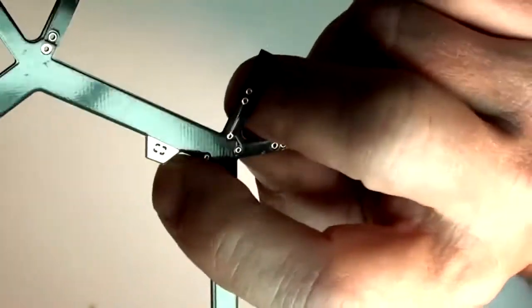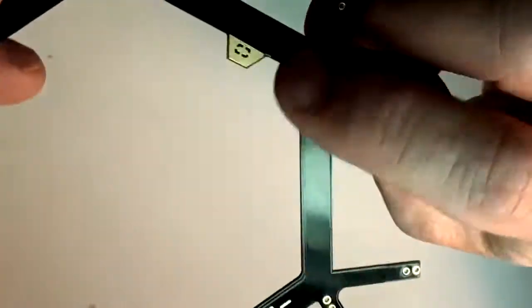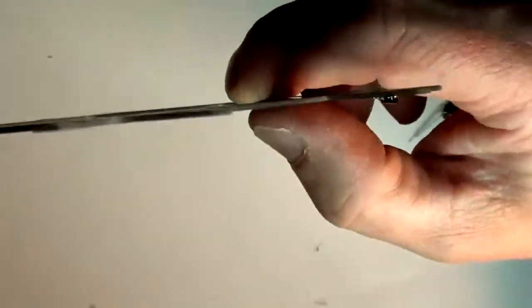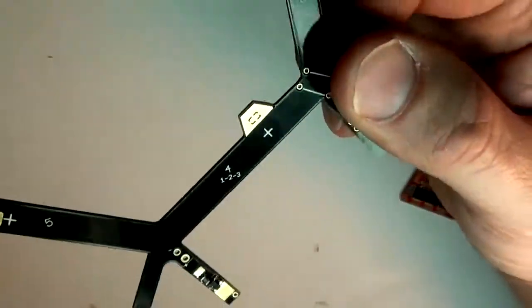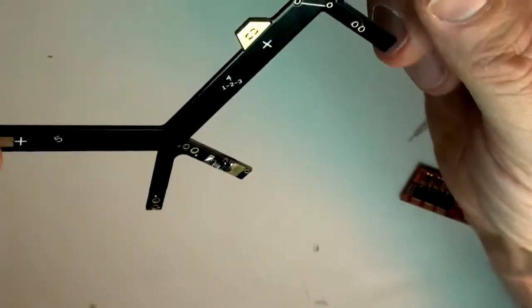But you want to be very careful when you solder this not to bridge any solder over the edge because it's really pretty thin and you can easily get a glob of solder over it and it'll definitely arc when you turn on your battery for the first time.